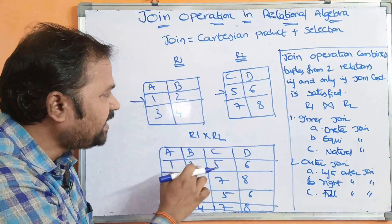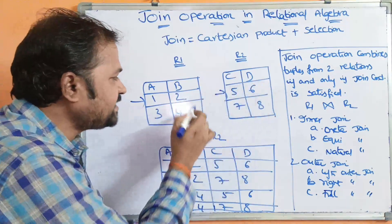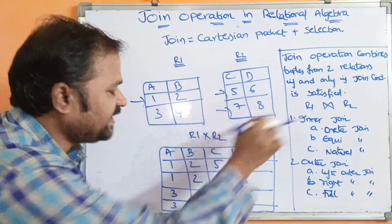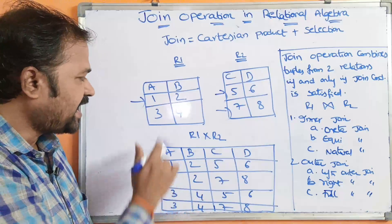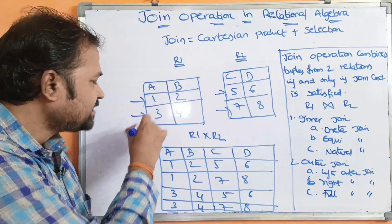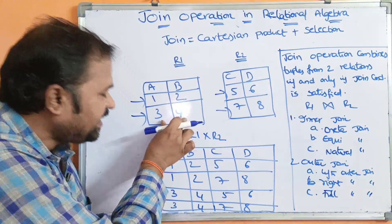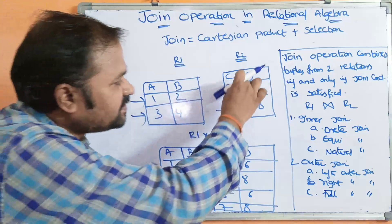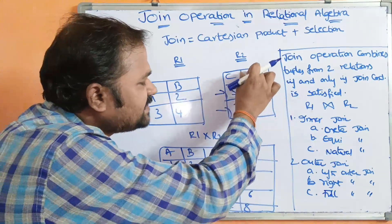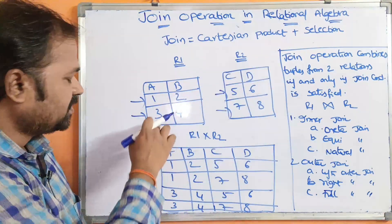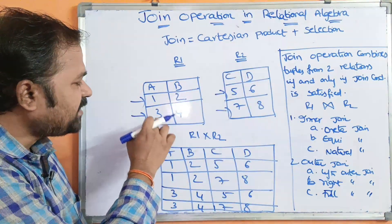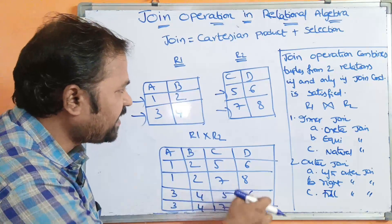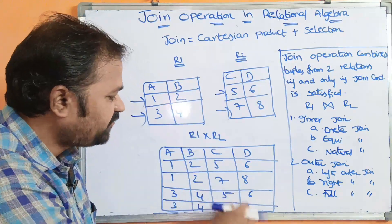So 1, 2 is combined with 5, 6. Next, 1, 2 is combined with 7, 8. Likewise, the second row of the first relation is combined with all the rows of the second relation. So the second row of the first relation is 3, 4. So we get 3, 4, 5, 6 and 3, 4, 7, 8.